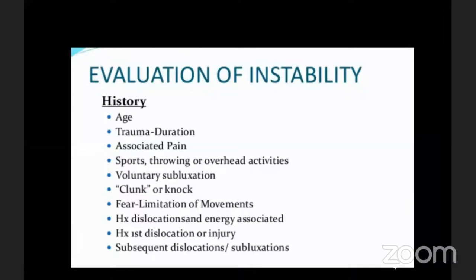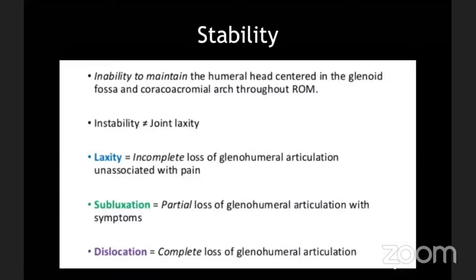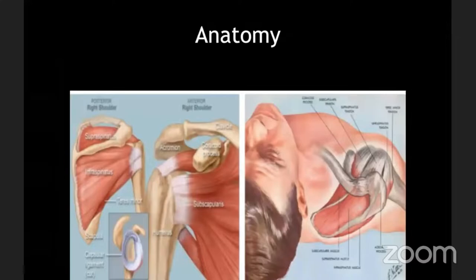Before going to physical examination, I will mention a few anatomical features which will help us understand the special tests. The shoulder is the most unstable joint in the body, with maximum mobility. Importantly, instability is not equal to joint laxity — laxity means incomplete loss of glenohumeral articulation without associated pain, and it could manifest as subluxation or dislocation.